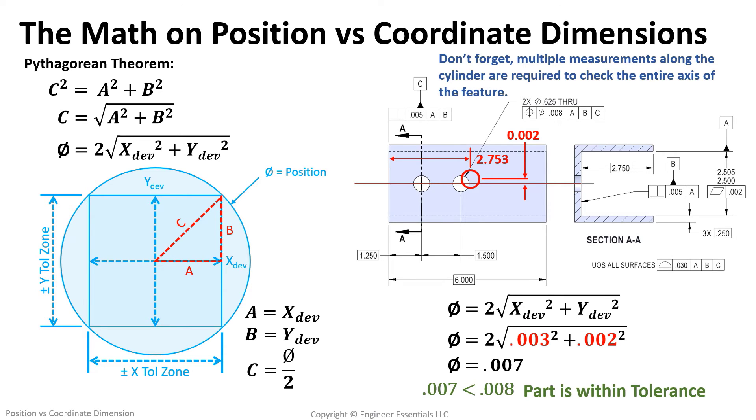But don't forget that position is not just a single two-dimensional measurement. Multiple measurements should be taken down the entire depth of this hole to find the worst case scenario in its total diametric deviation.